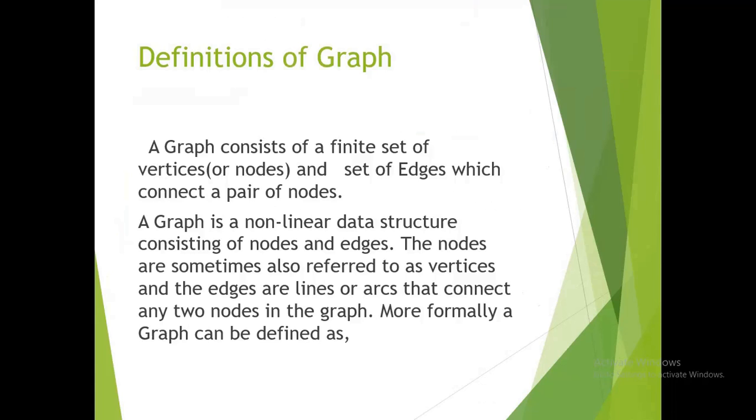Definition of graph. A graph consists of a finite set of vertices and edges which connect a pair of nodes. A graph is a non-linear data structure consisting of nodes and edges.